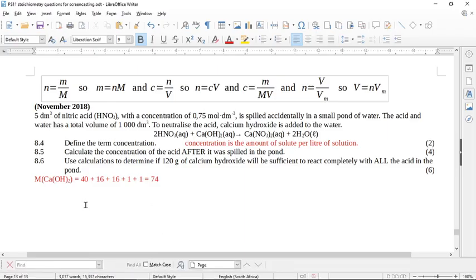Okay, here we have November 2018, question number eight. Five cubic decimeters of nitric acid with a concentration of 0.75 moles per cubic decimeter is spilled accidentally in a small pond of water. The acid in water has a total volume of a thousand cubic decimeters. To neutralize the acid, calcium hydroxide is added to the water. So 2HNO₃ + Ca(OH)₂ goes to Ca(NO₃)₂ + H₂O.